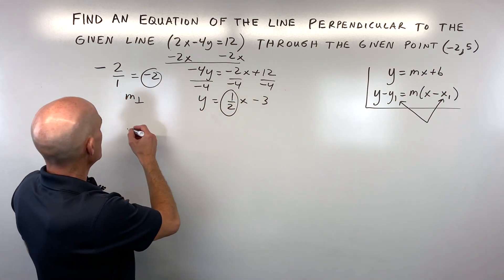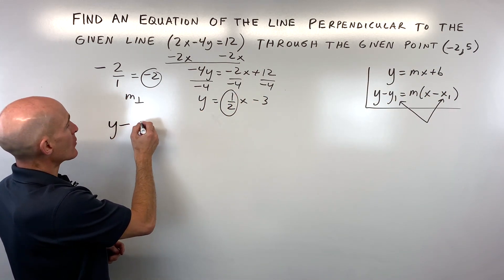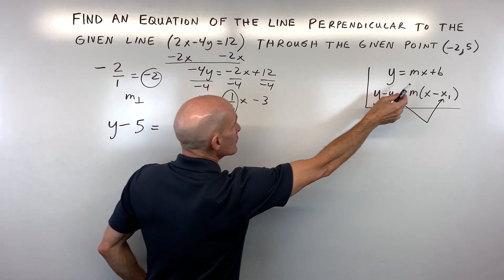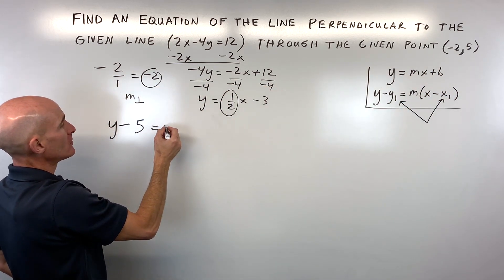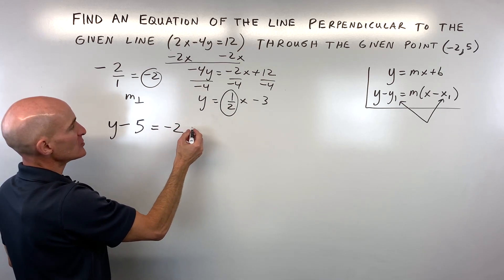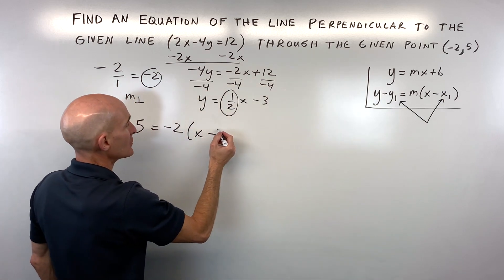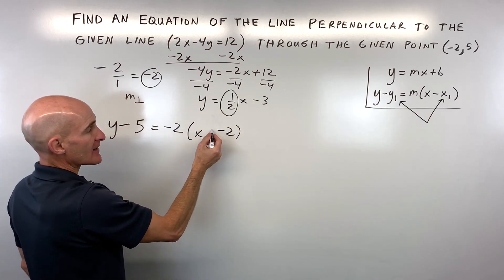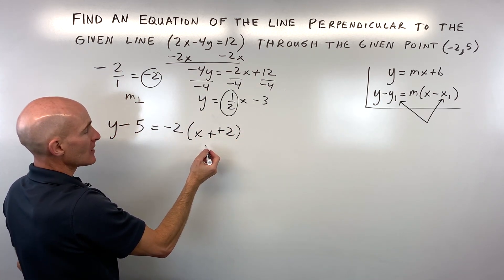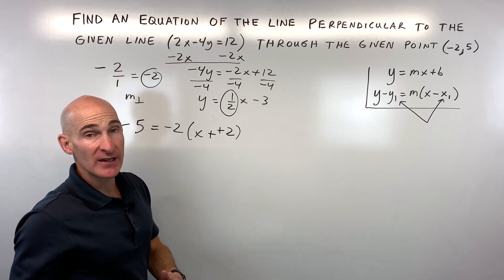So what we're going to do is start off by saying y minus our y-coordinate of our point, which is 5, equals our slope, our perpendicular slope, negative 2, times x minus the x-coordinate of our point, which is negative 2. Now remember, when you subtract, it's like adding the opposite. And this is our point-slope form. You can leave it like that.